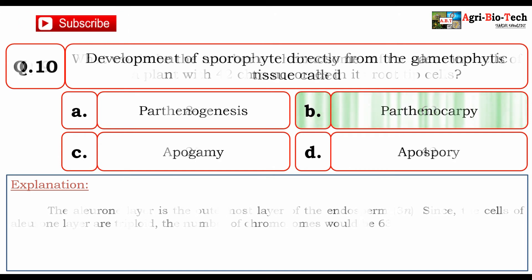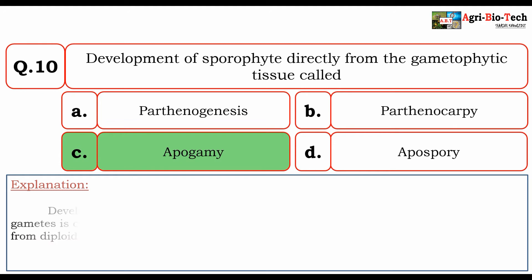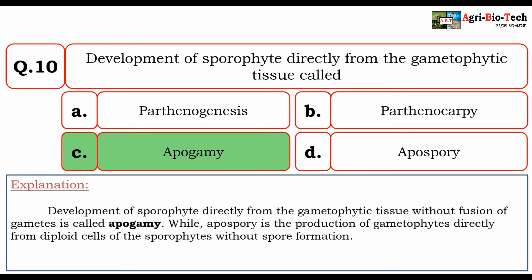Next question: development of sporophyte directly from the gametophytic tissue is called — parthenogenesis, parthenocarpy, apogamy, or apospory? The correct answer is C: apogamy. Development of sporophyte directly from the gametophytic tissue without fusion of gametes is called apogamy, while apospory is the production of gametophytes directly from the diploid cells of the sporophyte without spore formation.